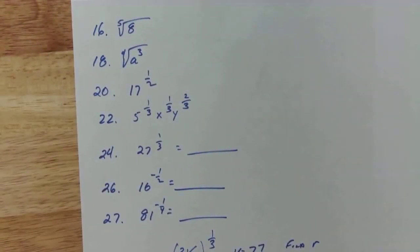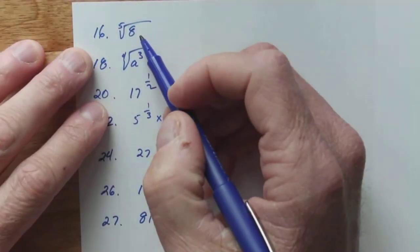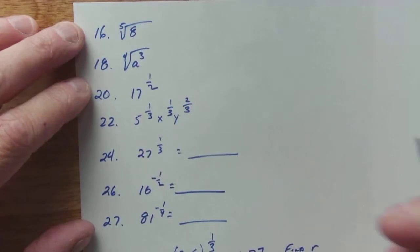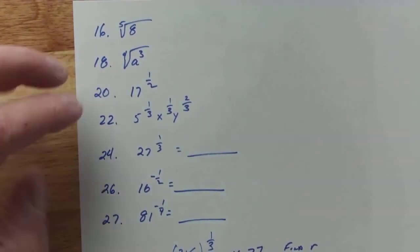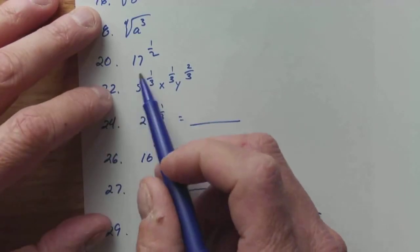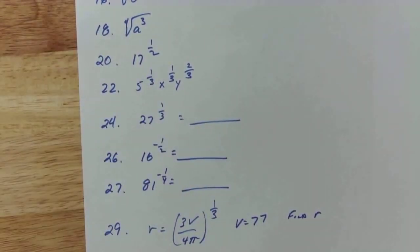First of all, a rational exponent. Remember that this was 8 to the 1/5th. Same thing as the 5th root of 8. This was 8 to the 3/4ths. Same thing as 4th root of 8 to the 3rd. This one was the square root of 17, which is the same thing as 17 to the 1/2. And this was the 3rd root of 5xy squared. The 3rd root is the same thing as the 1/3rd power.